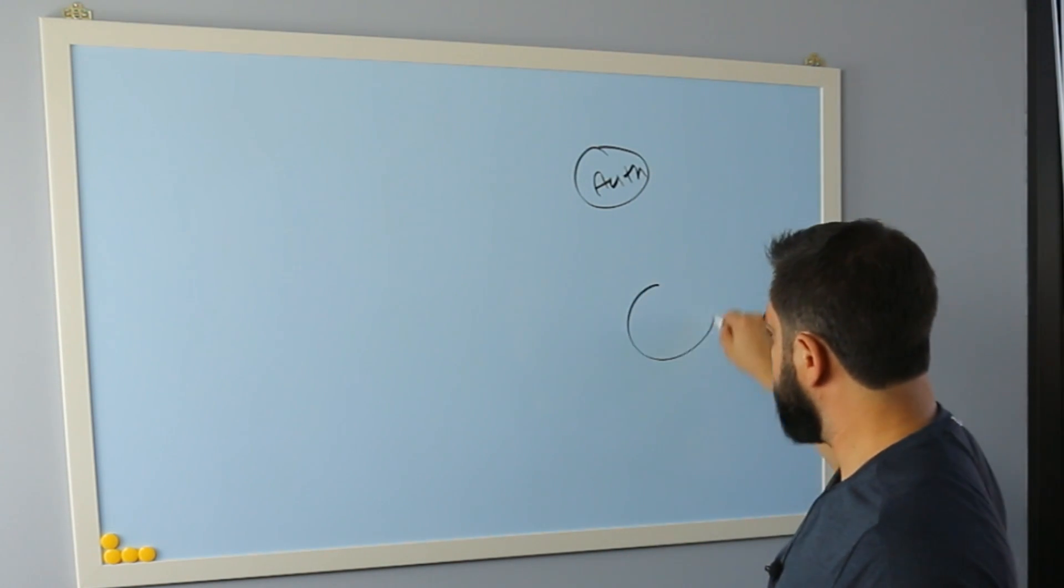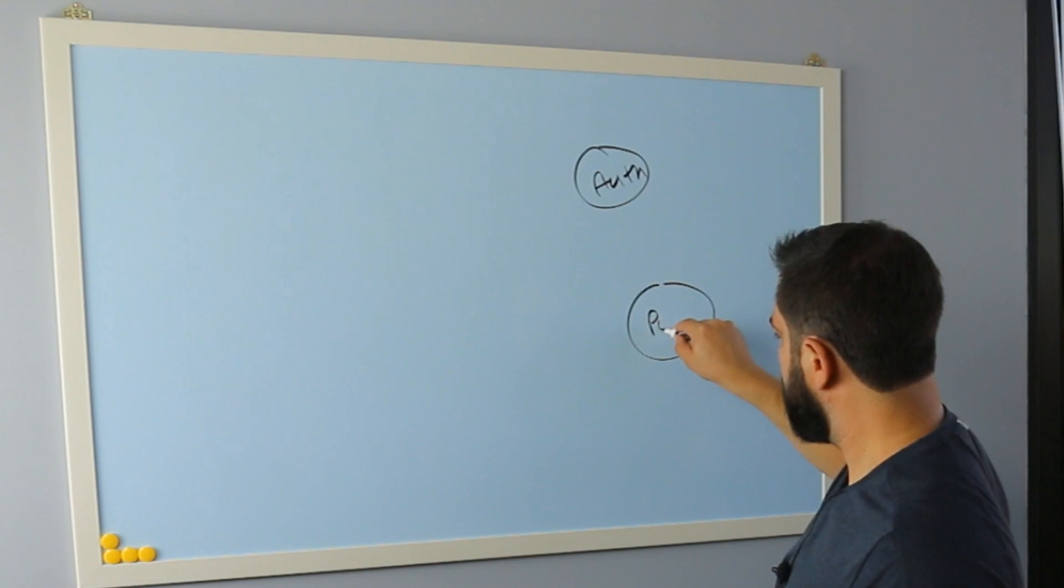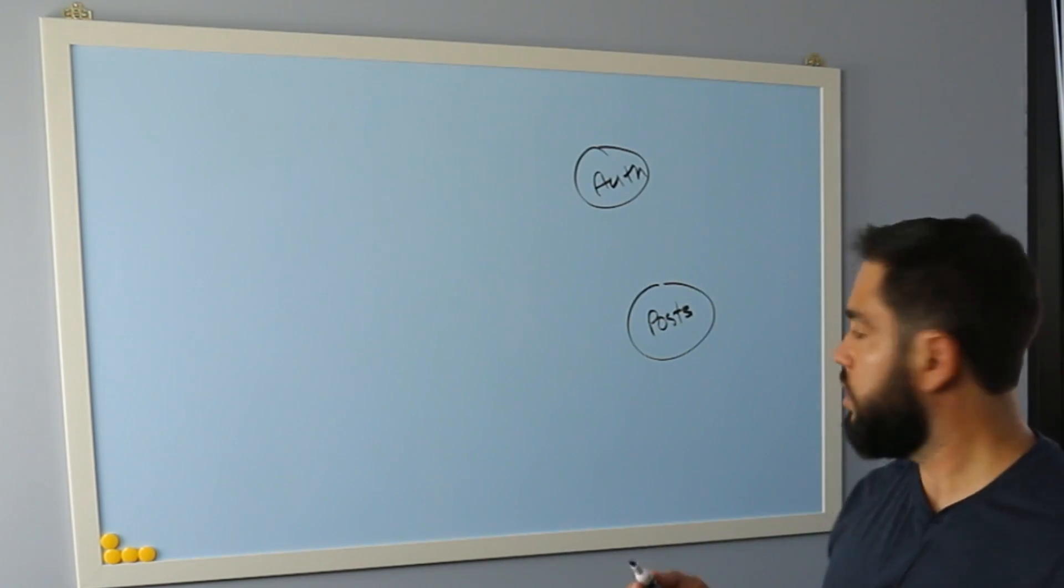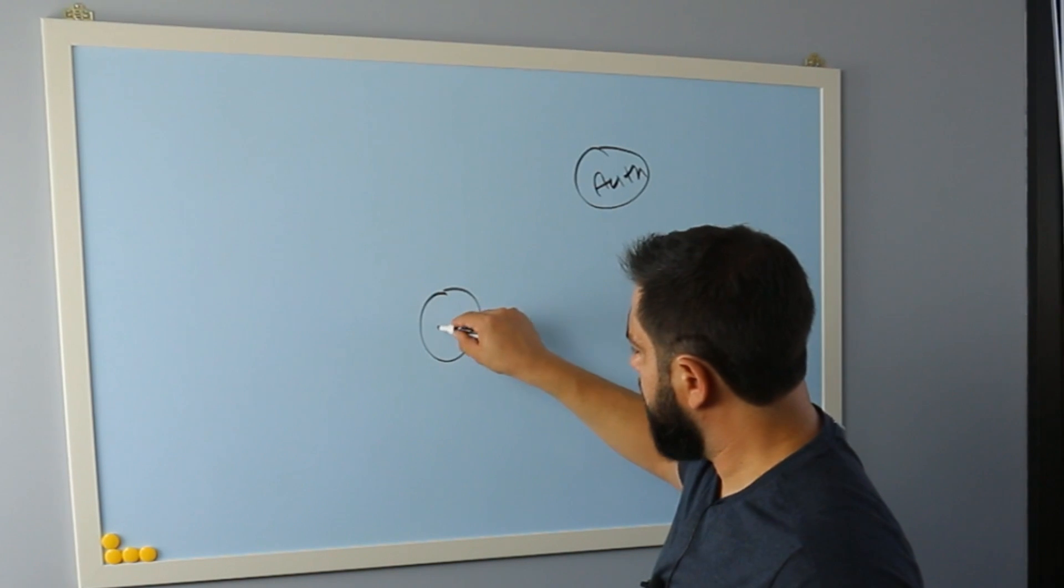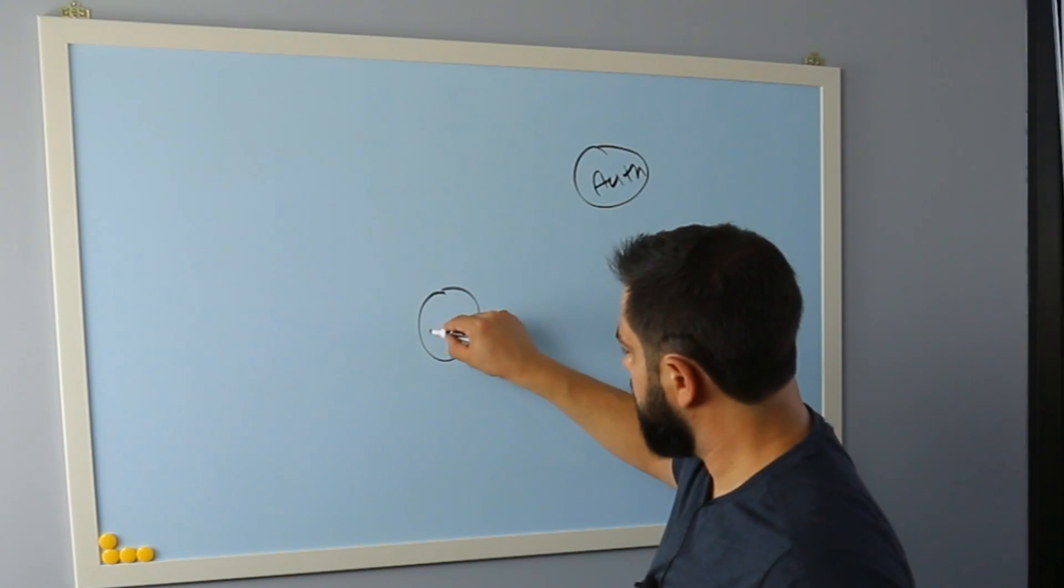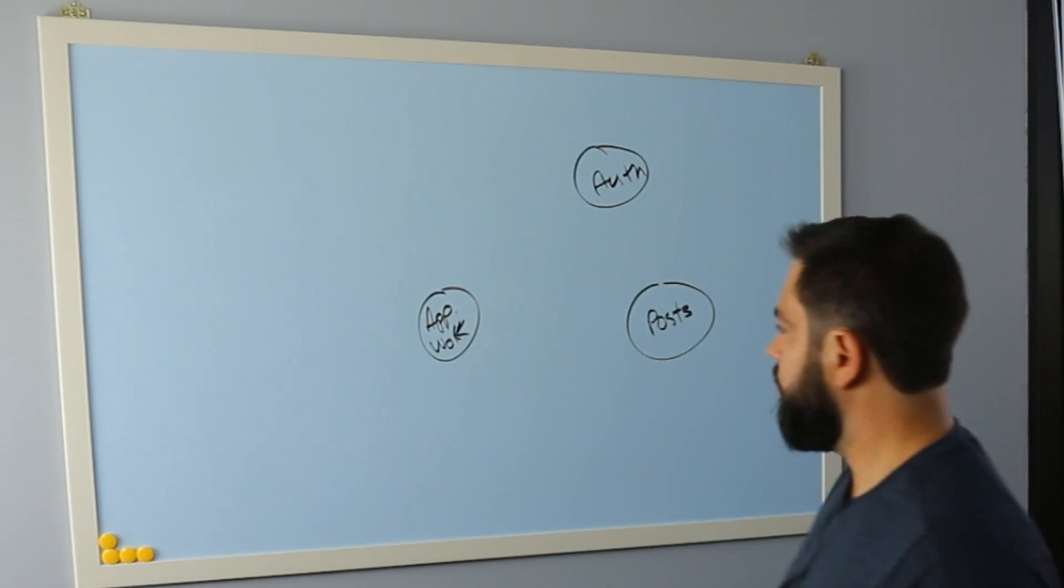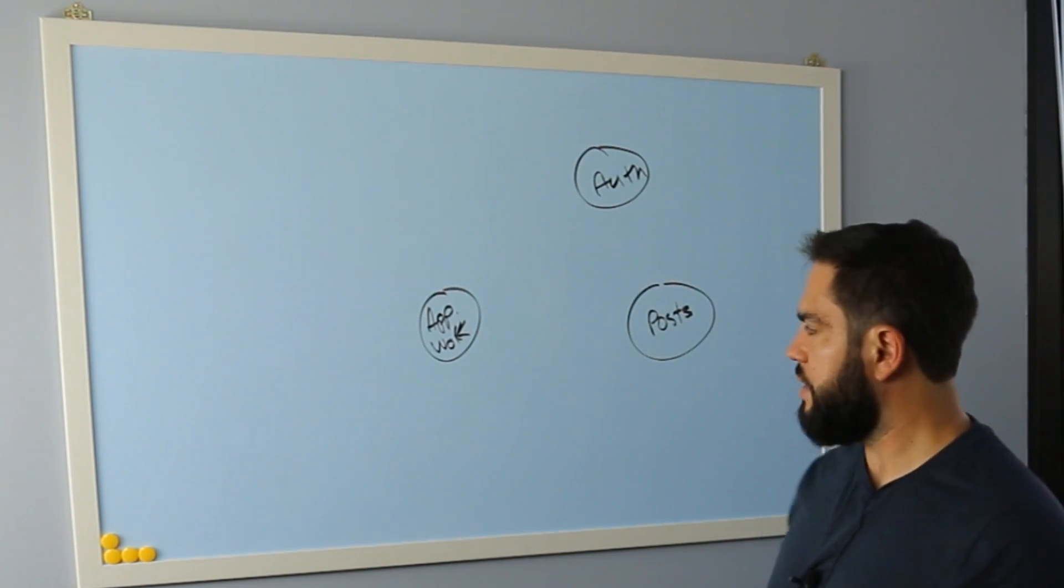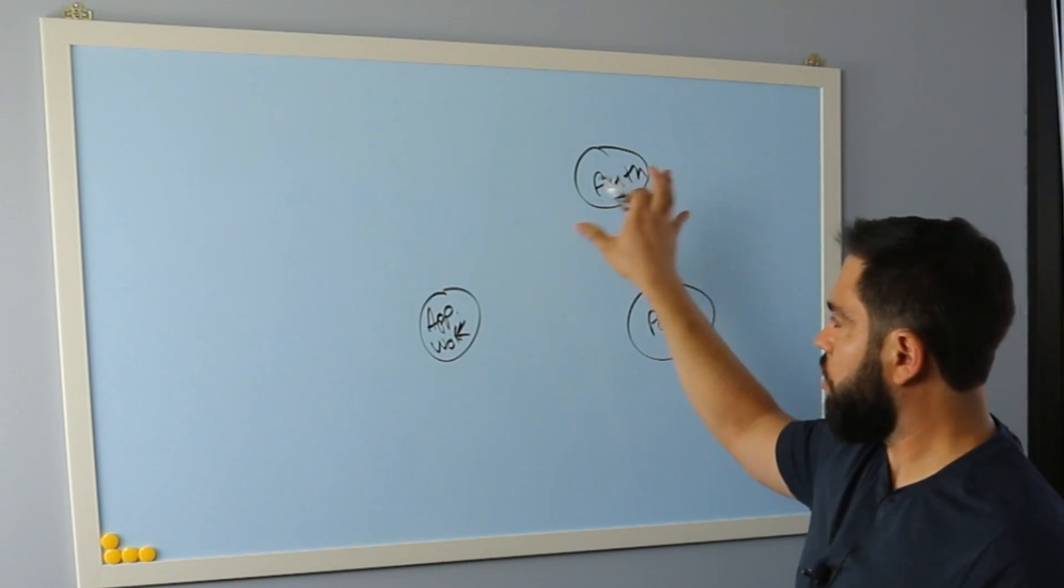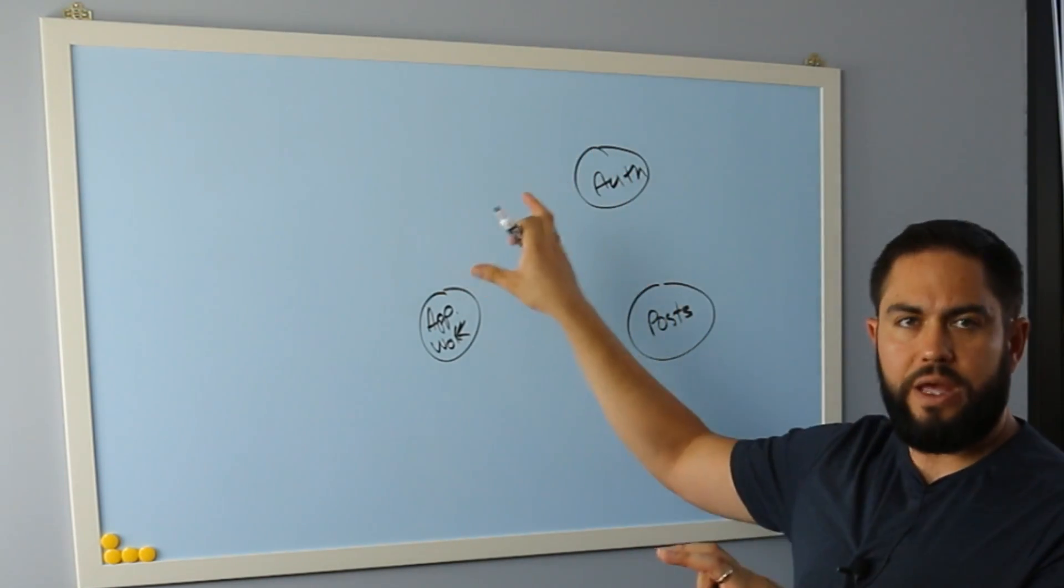And then we have the idea of posts. Posts would be its own application. And then if we have an authorization or an approval workflow, just like we had before, we have that approval workflow. And then you have each one of these and they're all separate entities.